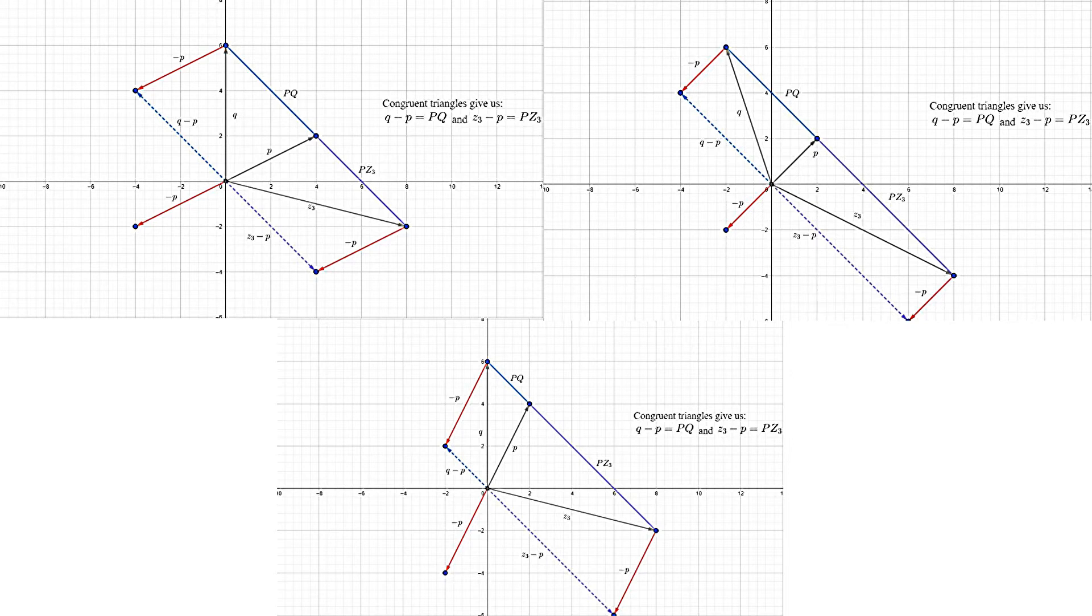Or really, since we've shown them as vectors, we have vector Q minus P equal vector PQ and vector Z3 minus P equal vector PZ. There is probably a more in-depth proof and explanation for what's shown in this diagram, but that's not the focus of this video.